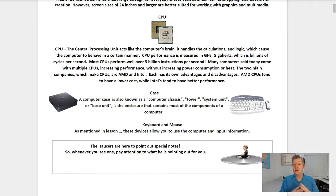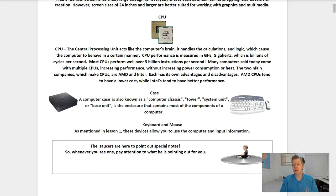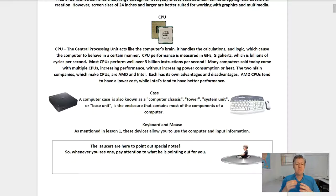The CPU, the central processing unit, acts like the computer's brain. It handles the calculations and logic which causes the computer to behave in a certain manner. CPU performance is measured in gigahertz, which is billions of cycles per second. Most CPUs perform well over three billion instructions per second. Many computers today come with multiple CPUs, increasing performance without increasing power consumption or heat. The two main companies which make CPUs are AMD and Intel. AMD CPUs tend to have a lower cost, while Intel's tend to have better performance.